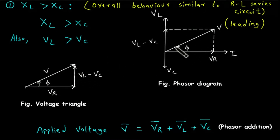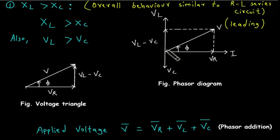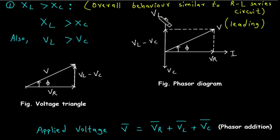From this phasor diagram we can draw the voltage triangle. V is the hypotenuse at angle phi. The opposite side is Vl minus Vc, since Vl is greater than Vc. The adjacent side is Vr. Applying Pythagoras theorem: V squared is equal to Vr squared plus (Vl minus Vc) whole squared, so V is equal to the square root of Vr squared plus (Vl minus Vc) whole squared.